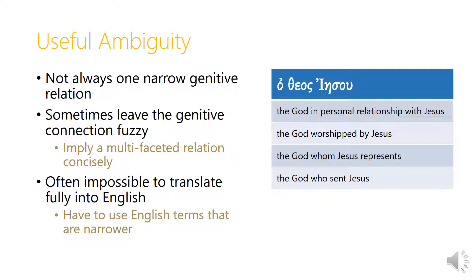We need to be careful not to overuse the idea of deliberate ambiguity. In most cases we want to ask what the specific relationship is between the genitive noun and the lead noun. But sometimes we shouldn't push too far for a black-and-white choice — the author may have more than one relationship in mind, capitalizing on how ambiguous the genitive is to express that cluster of relationships in a terse way.